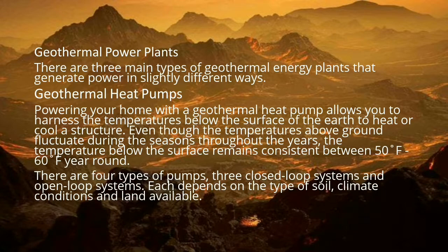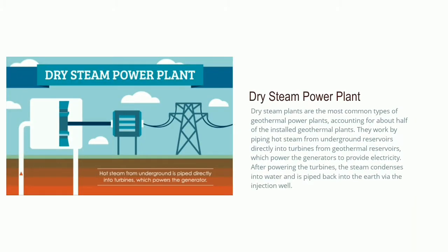In a dry steam power plant, steam is piped from an underground hot water reservoir or well to the turbine, which is connected to the generator. Dry steam power plant systems were the first type of geothermal power generation plant built. They were first used in Italy in 1904.